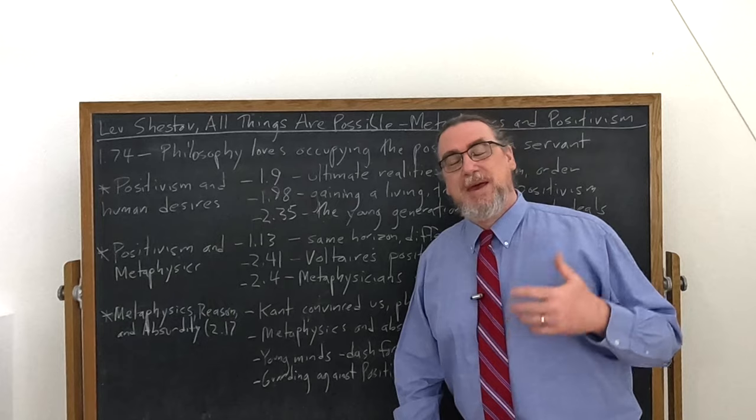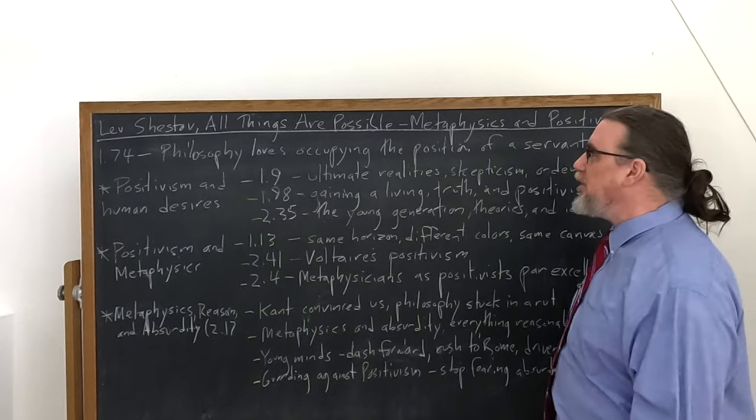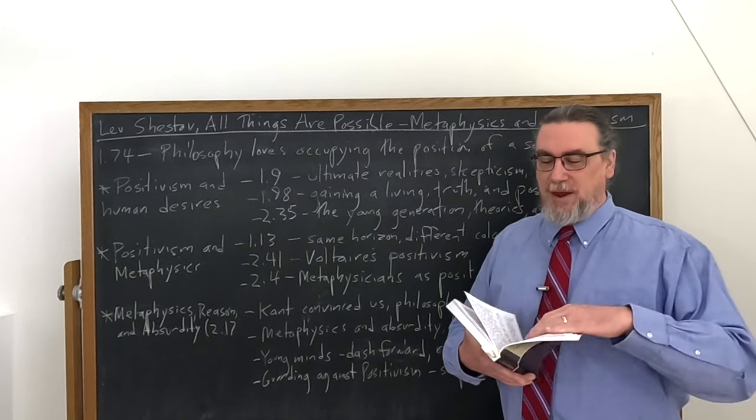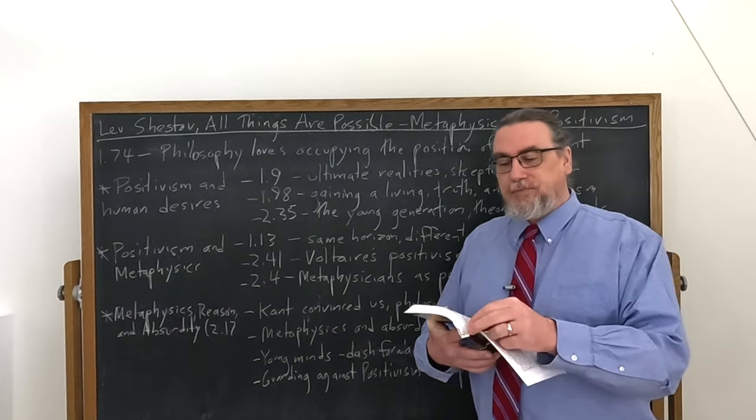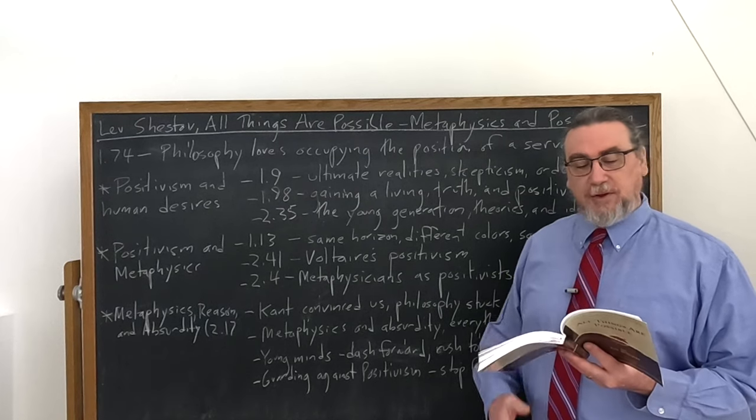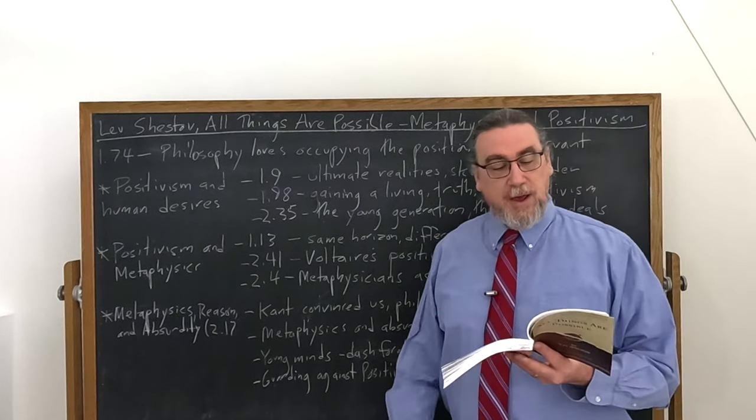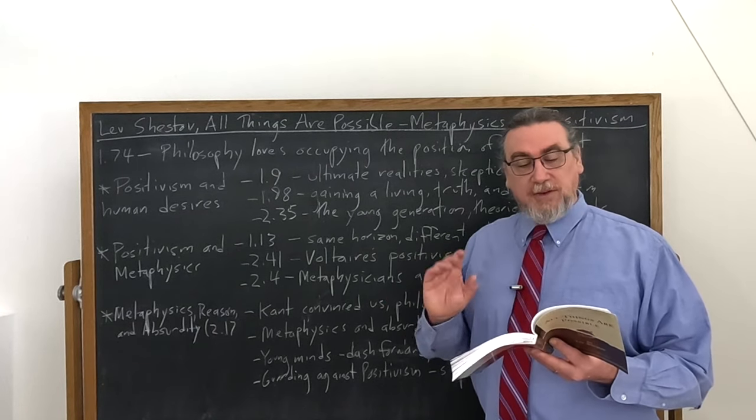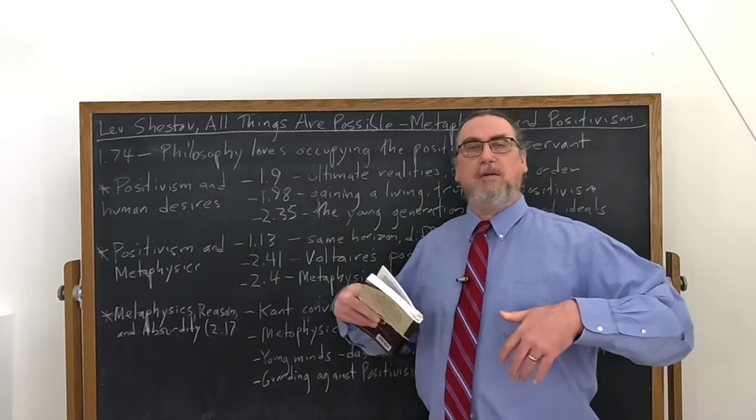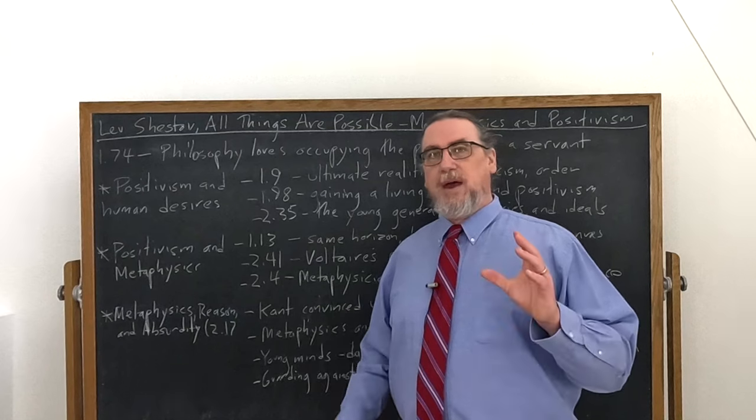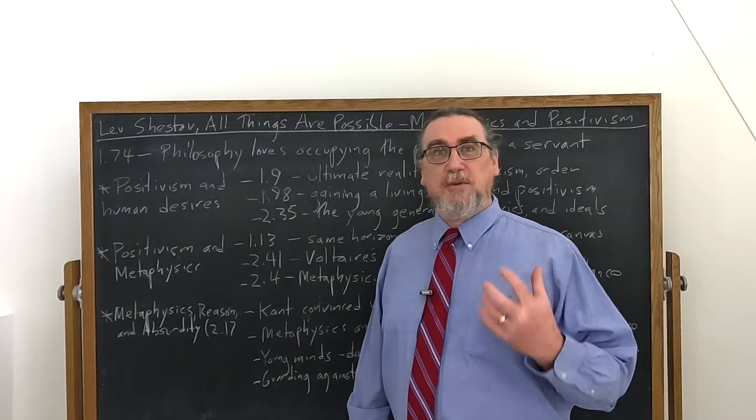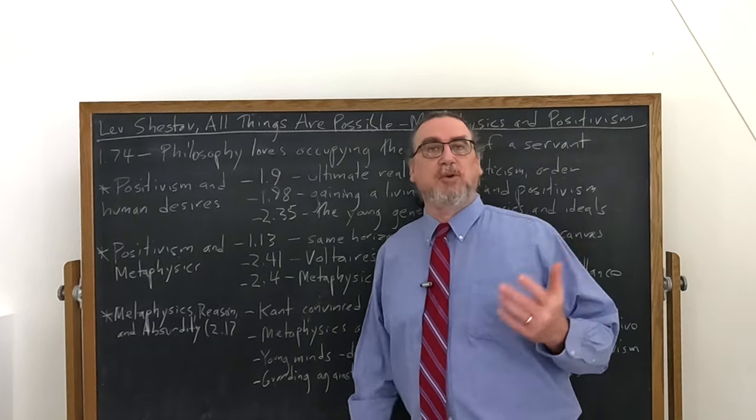So the first remark that we want to look at is in chapter nine. He tells us: we know nothing of the ultimate realities of our existence, nor shall we ever know anything, let that be agreed. But because of this, it doesn't follow we must accept some or other dogmatic theory as a modus vivendi.